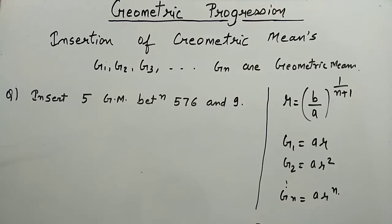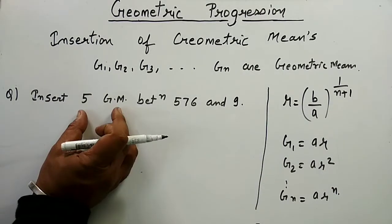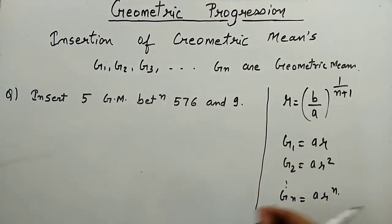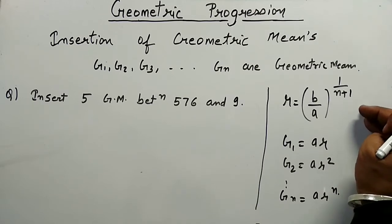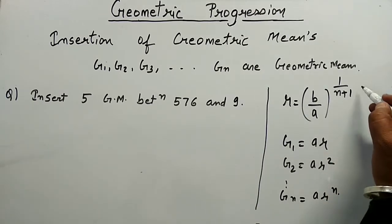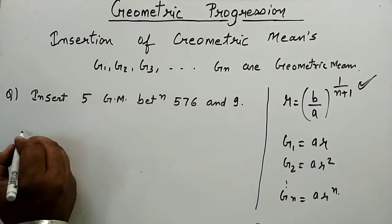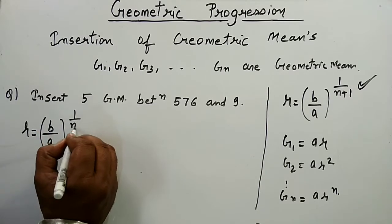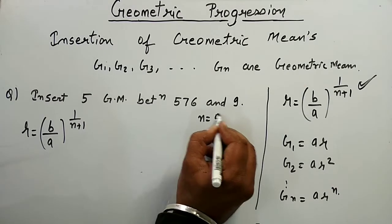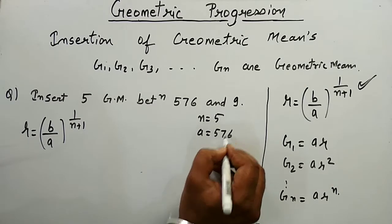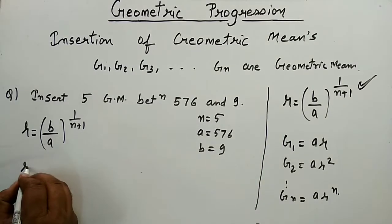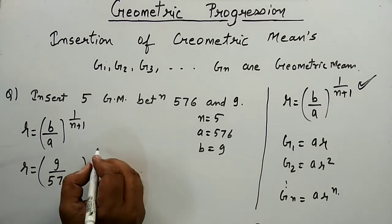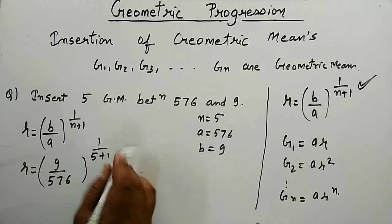Let's do a problem based on insertion of geometric means. We have to insert 5 geometric means between 576 and 9. First, find the common ratio using the formula r equals (b/a) to the power 1/(n+1). Here n equals 5, a equals 576, and b equals 9. So r equals (9/576) to the power 1/6.